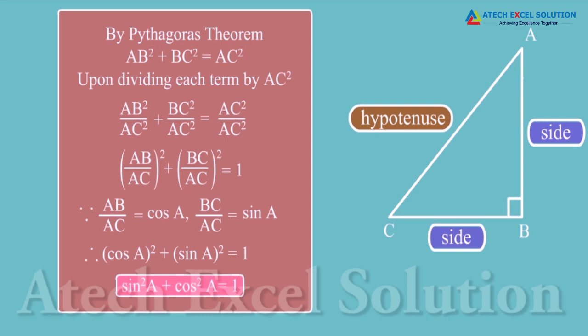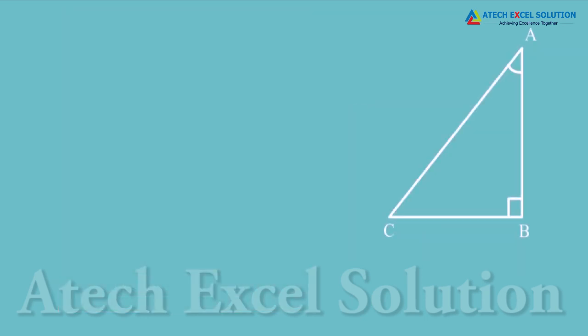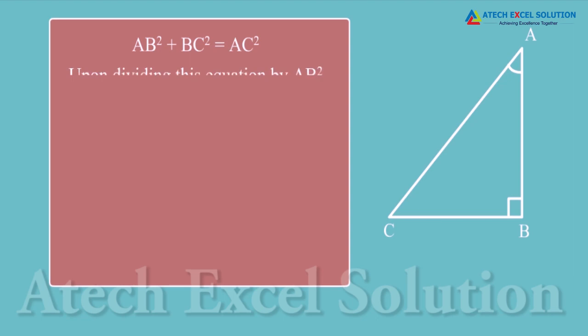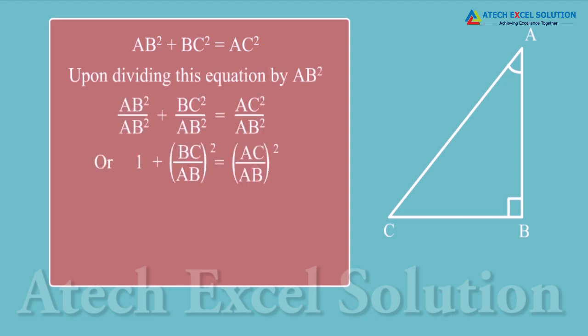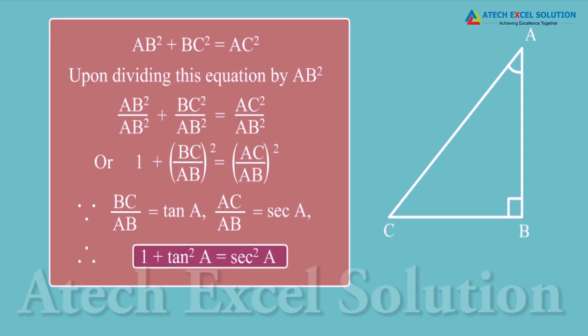Now let us divide this equation by AB². We get 1 + (BC/AB)² = (AC/AB)². Since BC/AB = tan A and AC/AB = sec A, upon substituting these values we get 1 + tan²A = sec²A. This is another trigonometric identity.